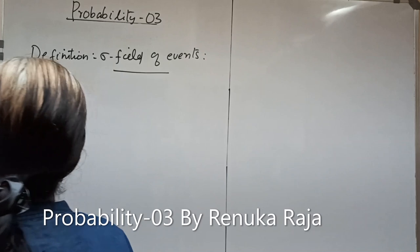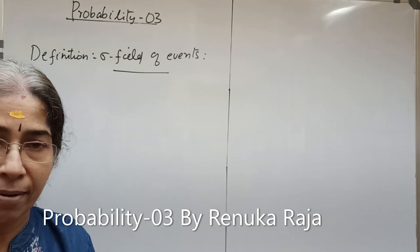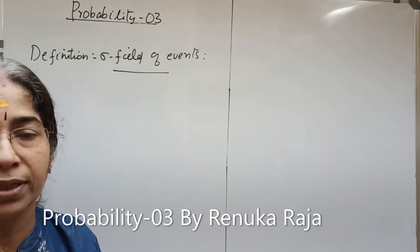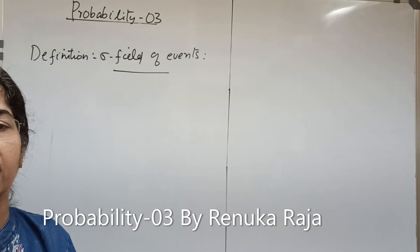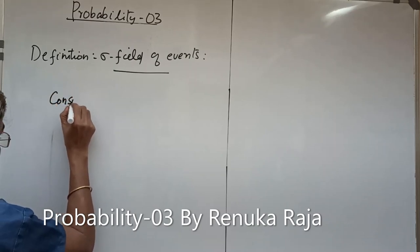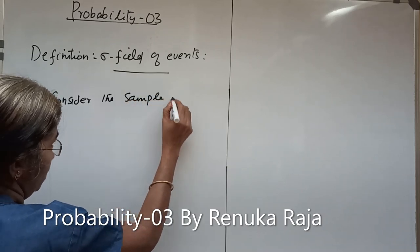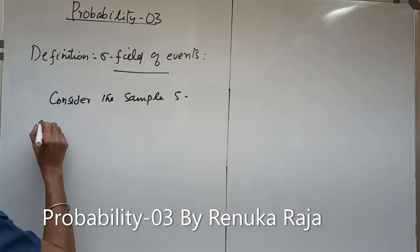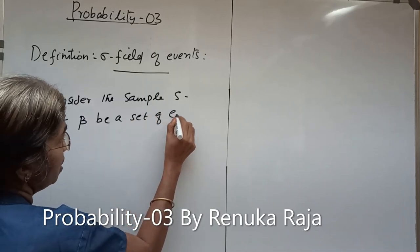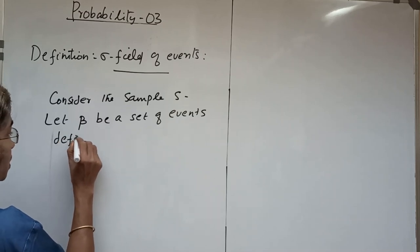Before that, we have the definition of sigma field of events. The basis of probability is the random experiment, and hence the sample space is the most fundamental concept. The sample space is the set of all possible results of a random experiment. We consider a set of events beta — let beta be a set of events defined on S.